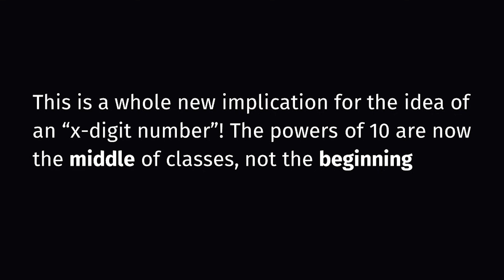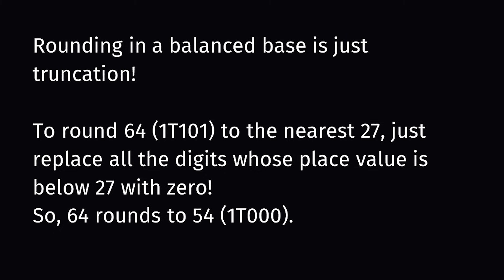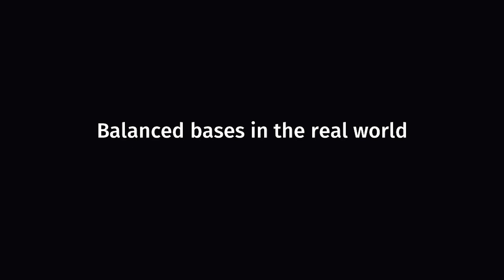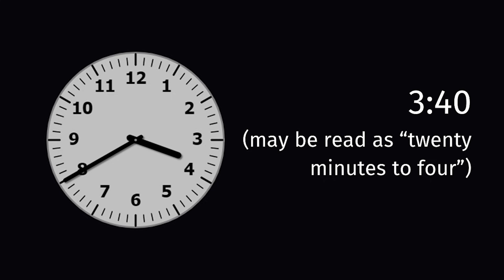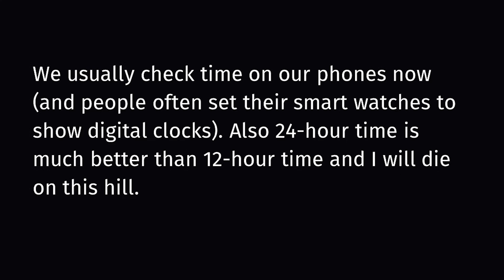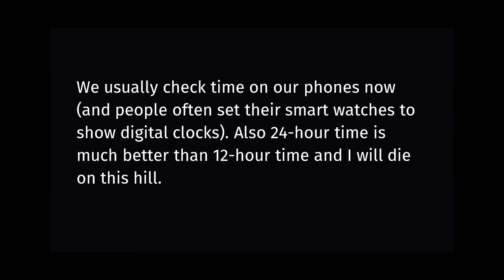Imagine a society that dealt with things in a balanced base, or you were designing a language with this principle. It places a different kind of emphasis on the powers of the base: instead of them marking the beginning of classes, they now mark the middle of classes. There is one scenario where we already use something that roughly resembles a balanced base — telling the time. If the time is 3:40, you might say it's 20 minutes to 4. This reinforces the idea that things are usually planned to the hour, and if it goes to the start of a new hour, expressing time in terms of the future may be more useful. When you consider an analog clock, that makes even more sense, because the hour hand is nearer to 4 than to 3. Though nowadays most people take their time from their phone, and phones don't usually show the time in an analog format.